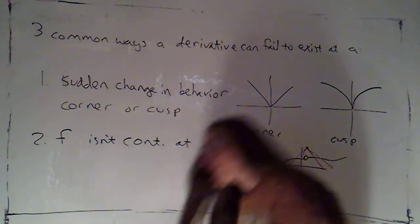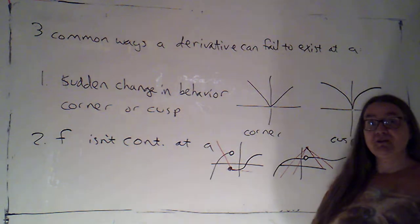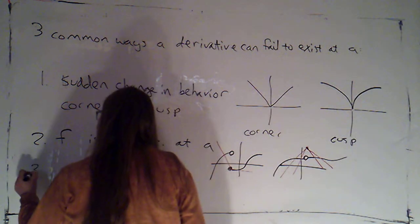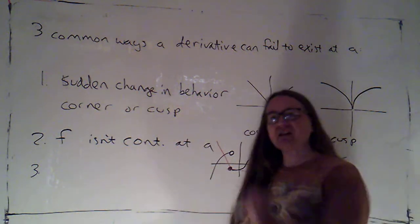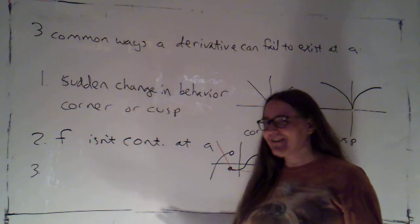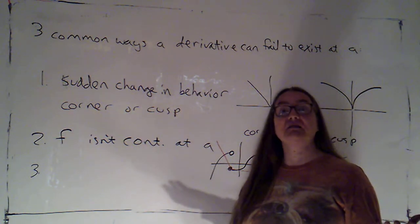There's a third common way that a function can fail to be differentiable. And this one, I think, is kind of interesting. Because for this third way, the tangent line exists. It just doesn't have a slope. And since the derivative is the slope of the tangent line, if the tangent line doesn't have a slope, the function is not differentiable.